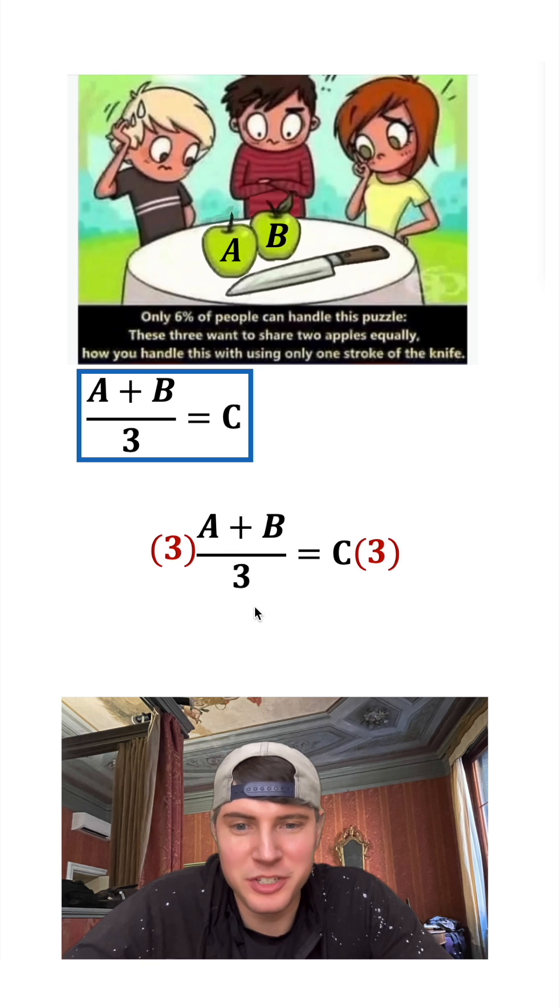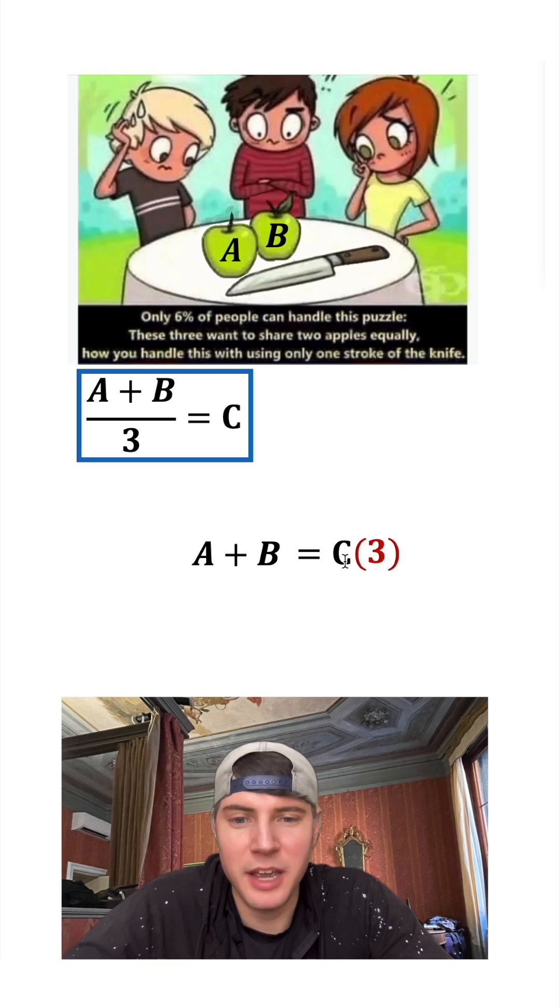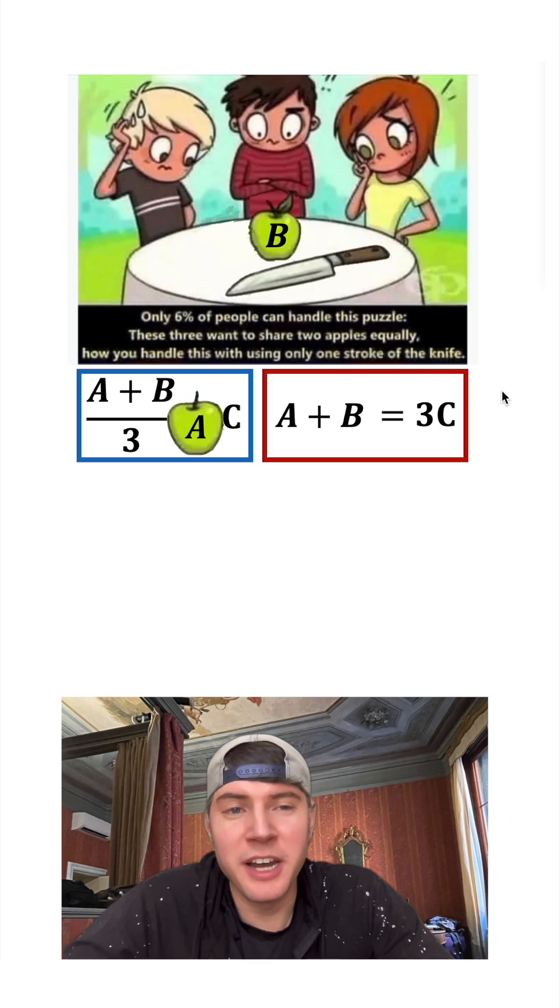Let's get rid of the fraction so we'll multiply both sides by three. These cancel which gives us A plus B, and then this side is 3C. Let's put a box around this and move it up here. Let's bring down this first apple.